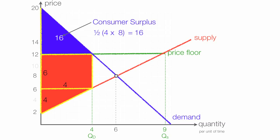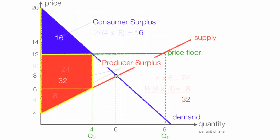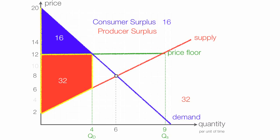Producer surplus is the two red areas — the red rectangle and the red triangle. The area of the rectangle is 4 times 6, which is 24. The area of the triangle is one-half times base times height, which is 8. So total producer surplus becomes 24 plus 8, which is 32. Consumer surplus is 16, producer surplus is 32, and when I add those together I get a total of 48.